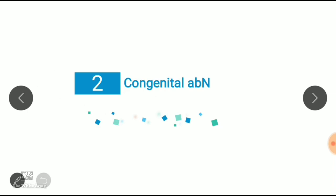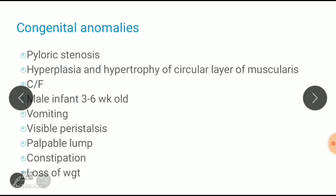The main congenital abnormality of the stomach is pyloric stenosis — hypertrophy and hyperplasia of the circular layer of muscularis in the pylorus. It is infantile in nature with male predominance, typically presenting in a child three to six weeks old. Features include projectile vomiting, visible peristalsis from left to right, a palpable mass, constipation, and weight loss.